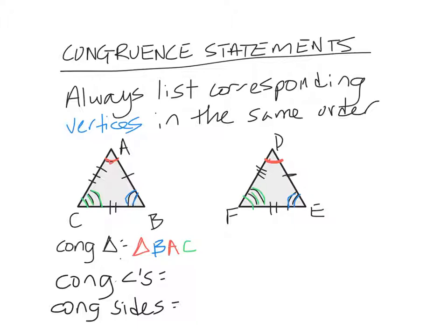So that would be congruent to triangle. I need to go in the same order. So in my other triangle, the blue is E. The red is D. And then the green is F.